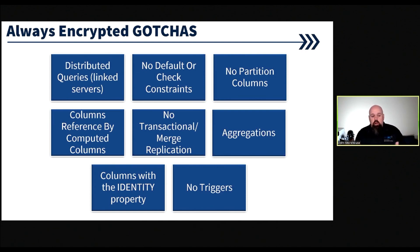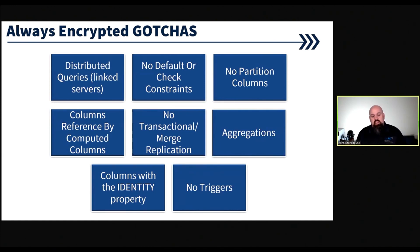Always Encrypted does have some gotchas: distributed queries won't work, so you can't do it over linked servers. No default or check constraints allowed. No partition columns. You can't do columns referenced by computed columns. You can't use replication with it. Aggregations might have issues, columns with identity properties, and no triggers. While I think it's a great solution, these could be roadblocks for you. You need to look at what your application and databases have in place today and see if those are roadblocks. I still like Always Encrypted as a solution — it's a powerful thing to use.